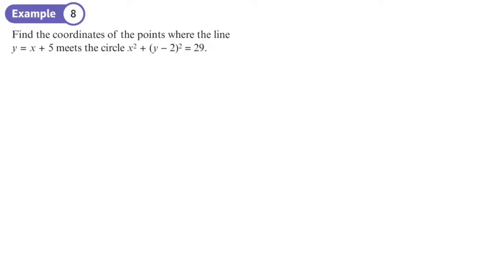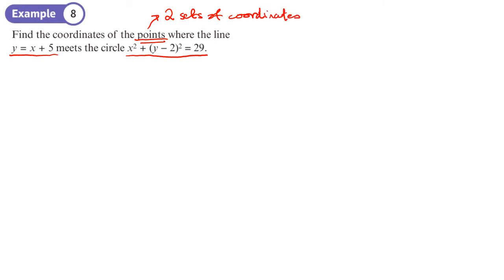The question asks us to find the coordinates of the points where the line y equals x plus 5 meets the circle. Because it says 'points' (plural), I'm expecting to find two sets of coordinates — that's a clue in the question. I'll substitute x plus 5 in place of y.